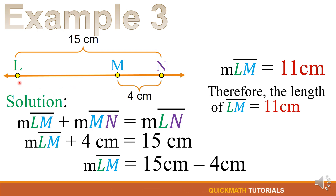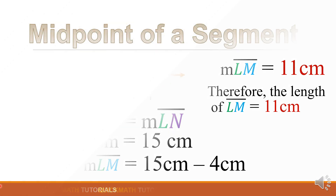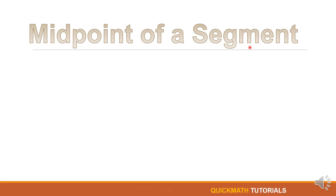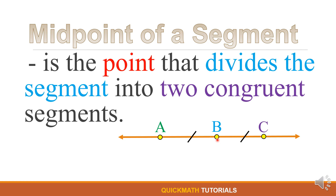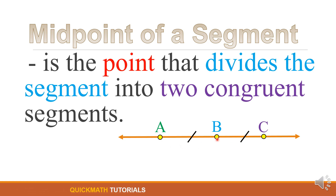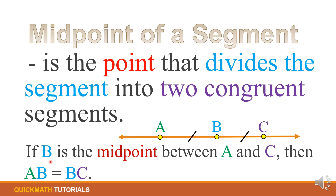Therefore the length of line segment LM is equal to 11 cm. In our illustration, since LM equals 11, then 11 plus 4 equals 15, so our answer is correct. Next, we have the midpoint of a segment. When we say midpoint, it is the point that divides the segment into two congruent segments. For example, if point B is the midpoint between point A and point C, then line segments AB and BC are congruent or have equal length.